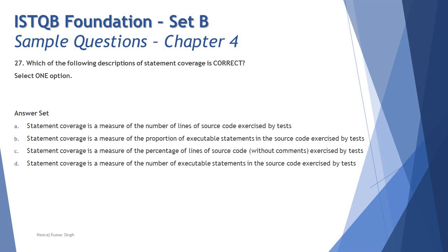Option B: statement coverage is a measure of the proportion of executable statements in the source code exercised by the test. Yes — it's a proportion, a ratio of statements exercised divided by total statements. Option C says it's a measure of the percentage of lines of source code without comments exercised by the test. No — it's about statements, not lines of code.